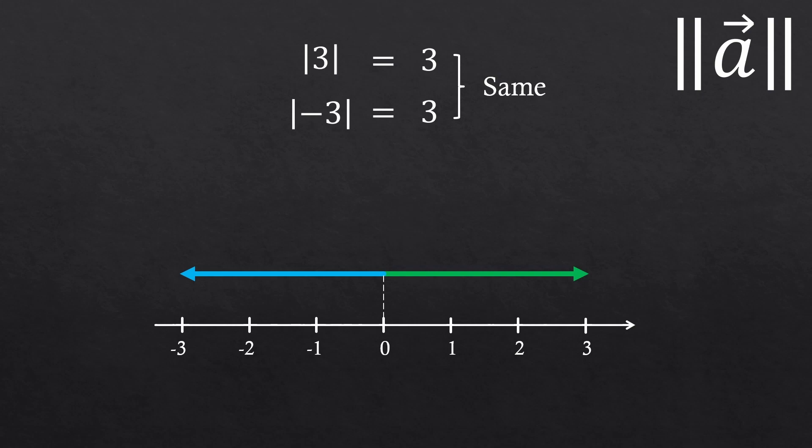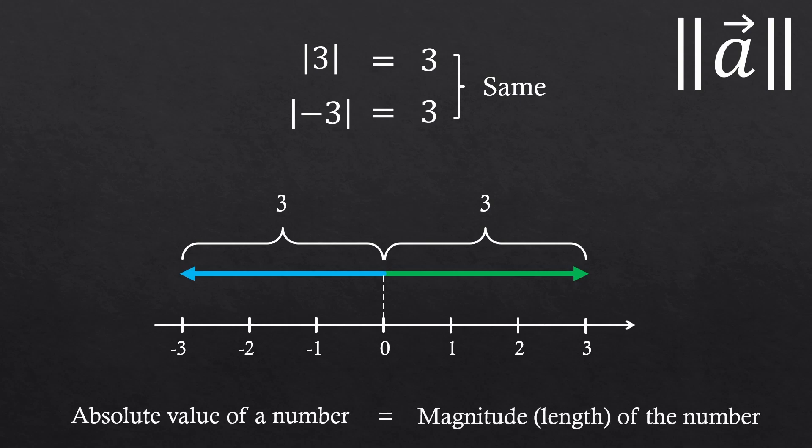The green arrow is reaching 3, and the blue arrow is reaching negative 3. But both arrows have the length of 3, right? So we could say that the absolute value of a number represents magnitude or length of the number.